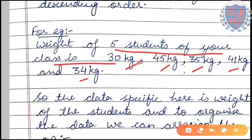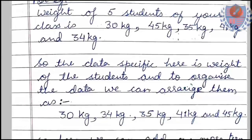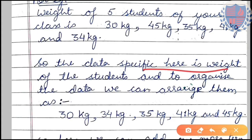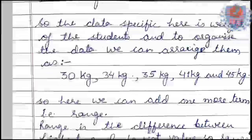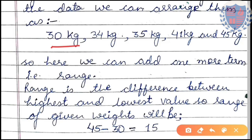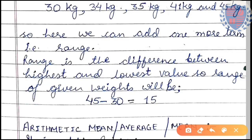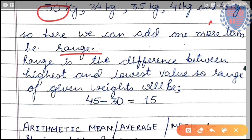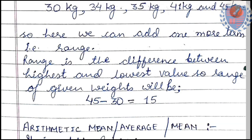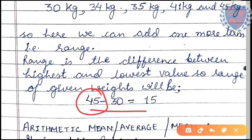The data specific here is the weight of the students. To organize this data, we arrange them in ascending order — smaller to bigger: 30, 34, 35, 41, and 45 kg. We can also define range here. Range is the difference between the smallest and the biggest value. So the range is 45 minus 30, which is 15. We will not write the unit here.